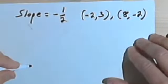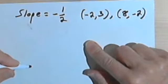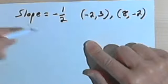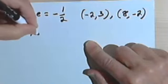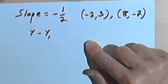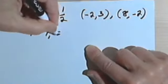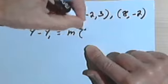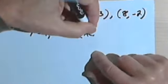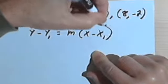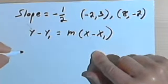What we're going to do this time is use the point-slope form of the equation. So you remember that was y minus y sub 1 equals m times x minus x sub 1.